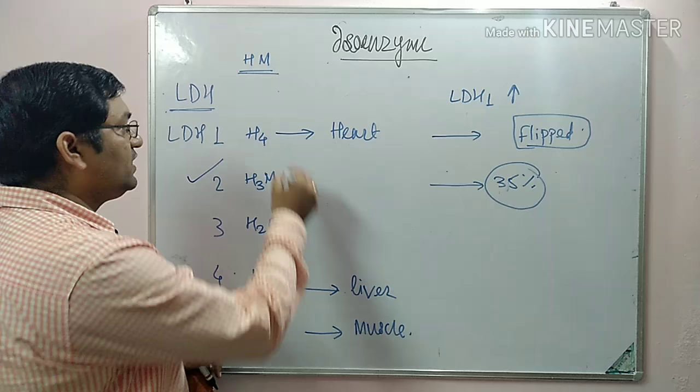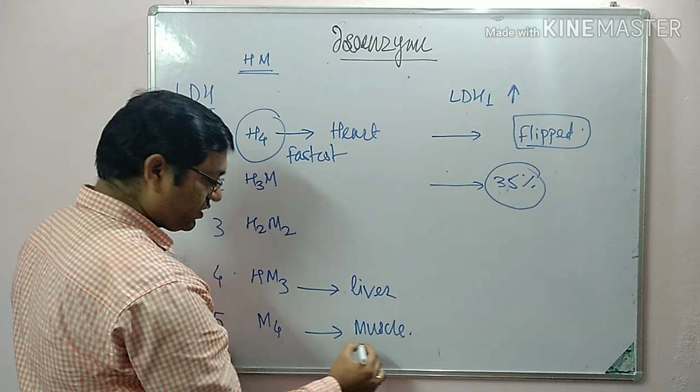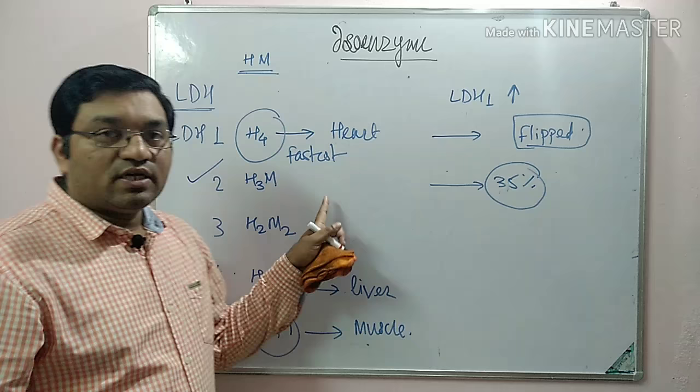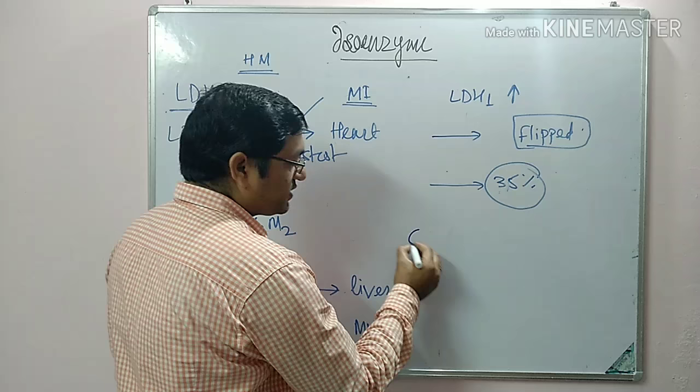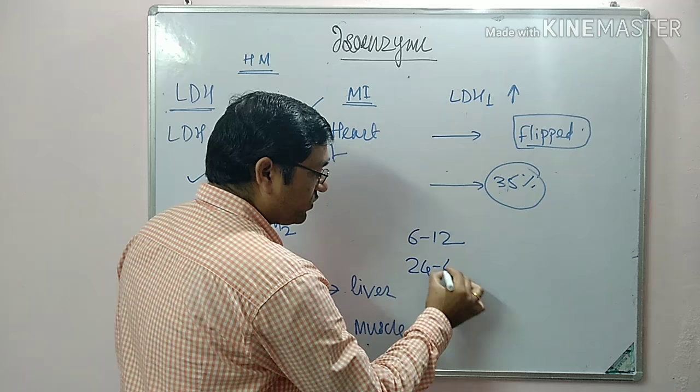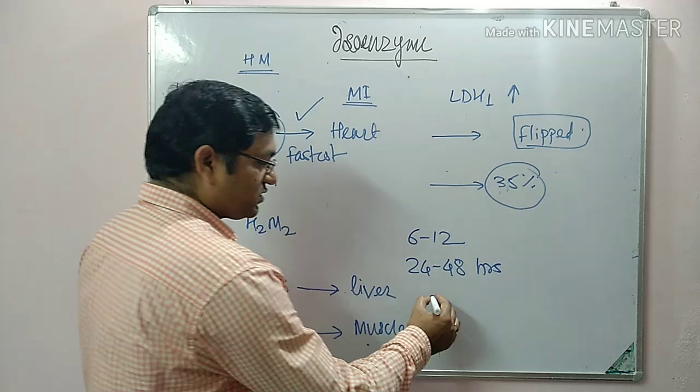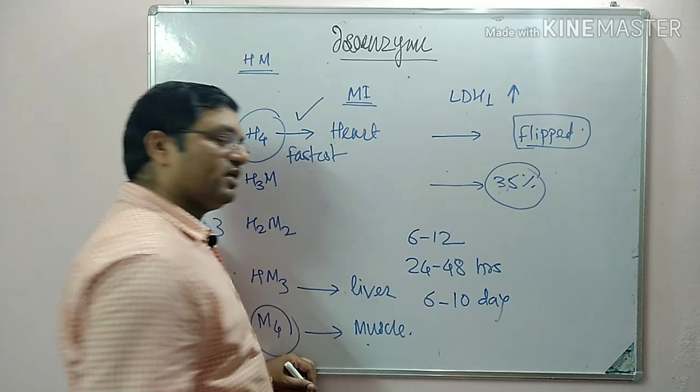LDH1 is a specific marker for myocardial infarction, but it is a late marker. It starts rising 6 to 12 hours after the attack, reaches its peak in 24 to 48 hours, and returns to normal in 6 to 10 days.